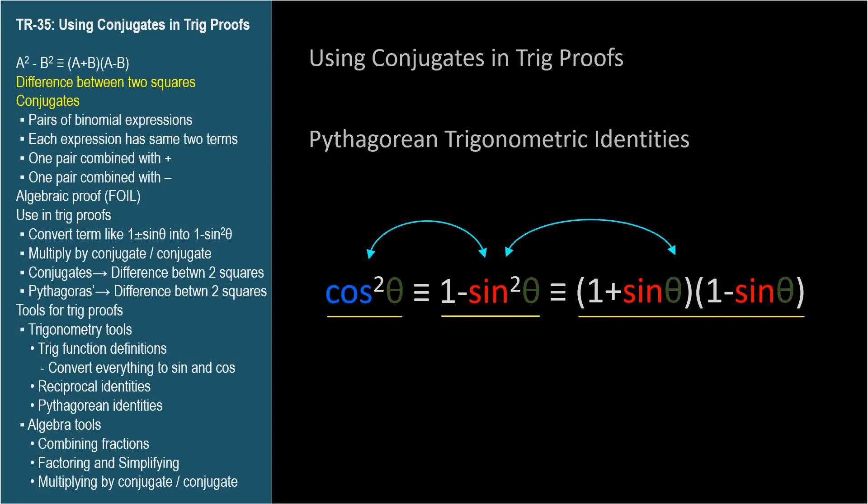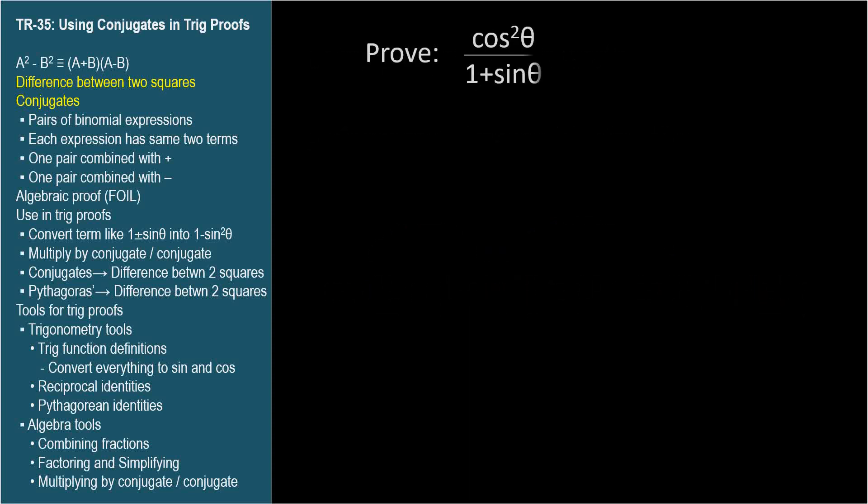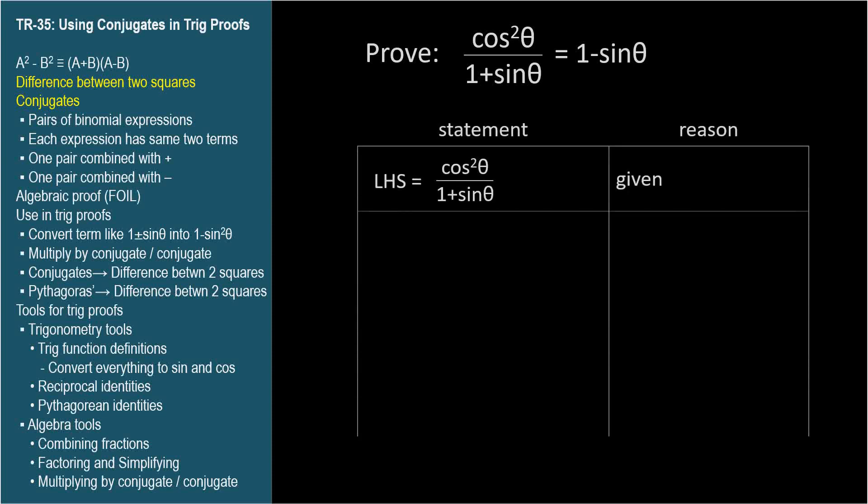Let's work an example. Let's prove that cosine squared theta over 1 plus sine theta equals 1 minus sine theta. Let's manipulate the left-hand side, as given. First, please don't make the mistake of thinking we can use a Pythagorean substitution and say that 1 minus sine theta equals cosine theta. The Pythagorean identities all deal with squared trig terms. 1 minus sine squared theta always equals cosine squared theta, but 1 minus sine theta does not always equal cosine theta.